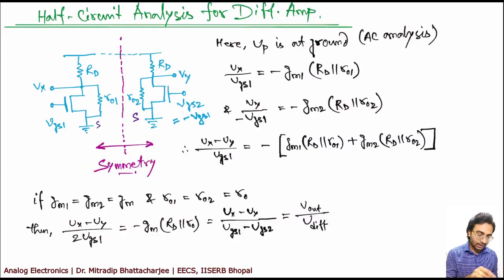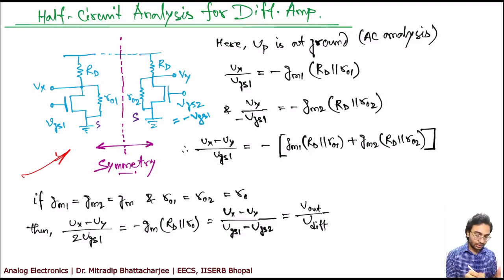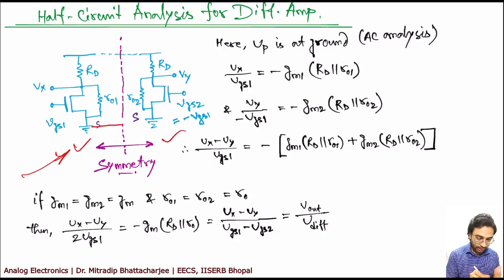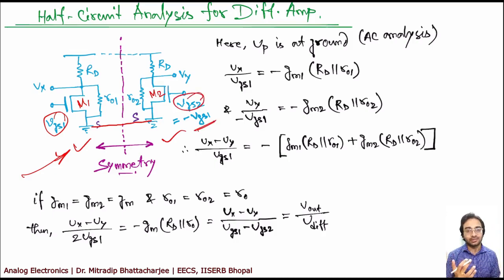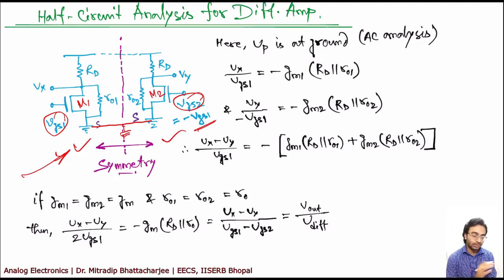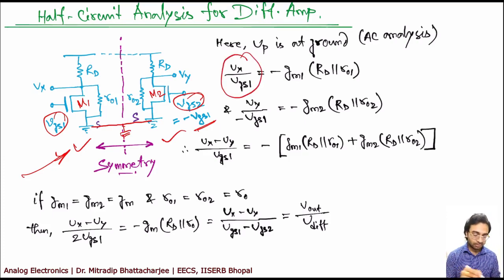Apply the same concept to your differential amplifier. You can divide your differential amplifier into two parts — left side and right side are exactly the same. In this case your VP point is grounded, which is at a common potential. That's why you take Vgs1 on the input side of M1, and on the M2 side it is minus Vgs1, so Vgs2 equals minus Vgs1. This is because we are considering only AC analysis, so all DC biases have been removed. Now Vx by Vgs1 — this side is a common-source amplifier kind.